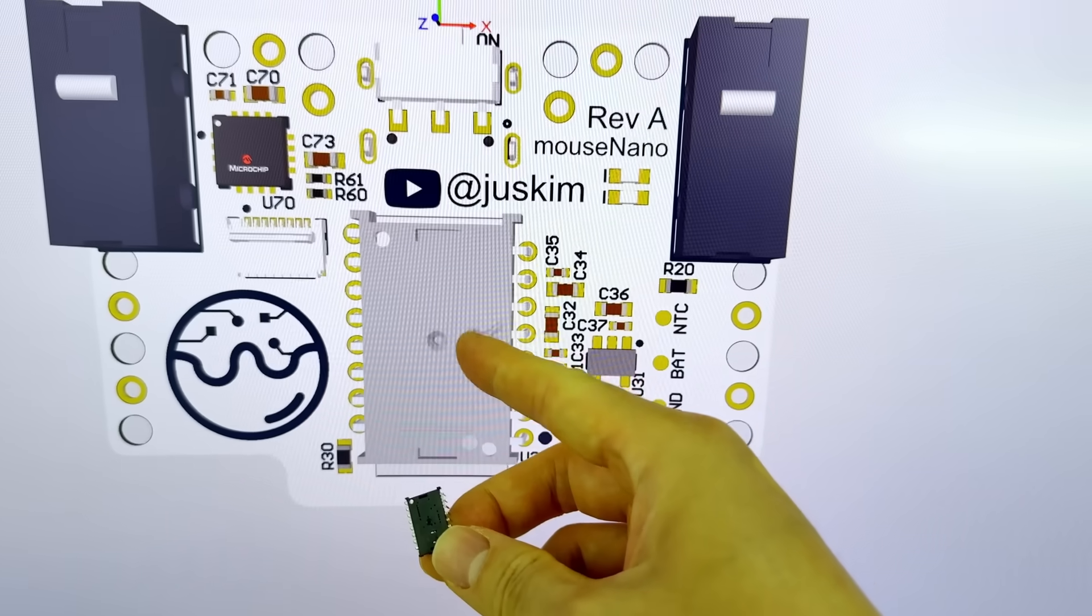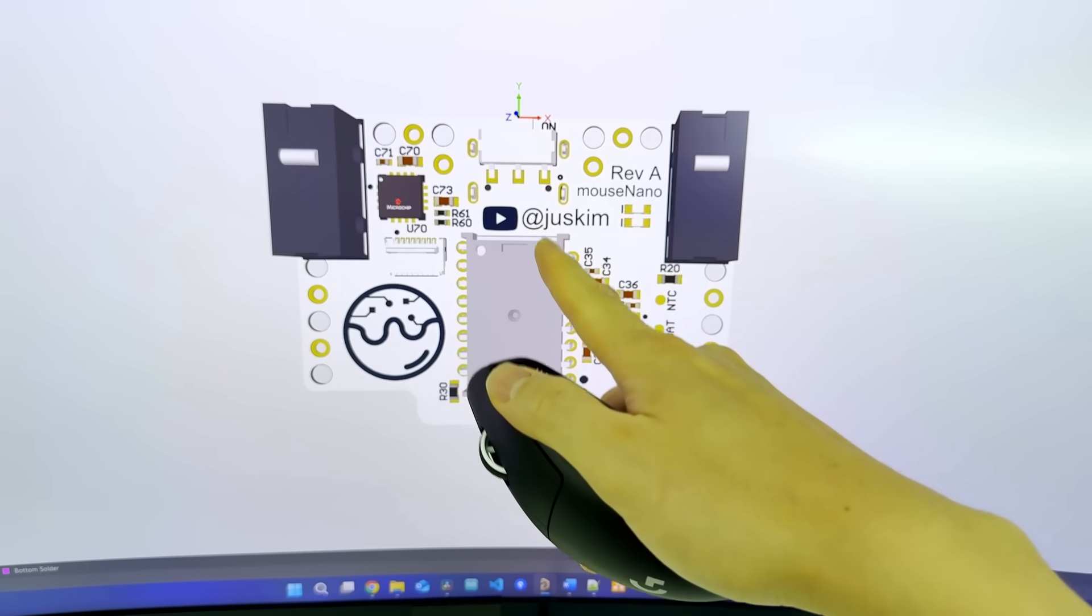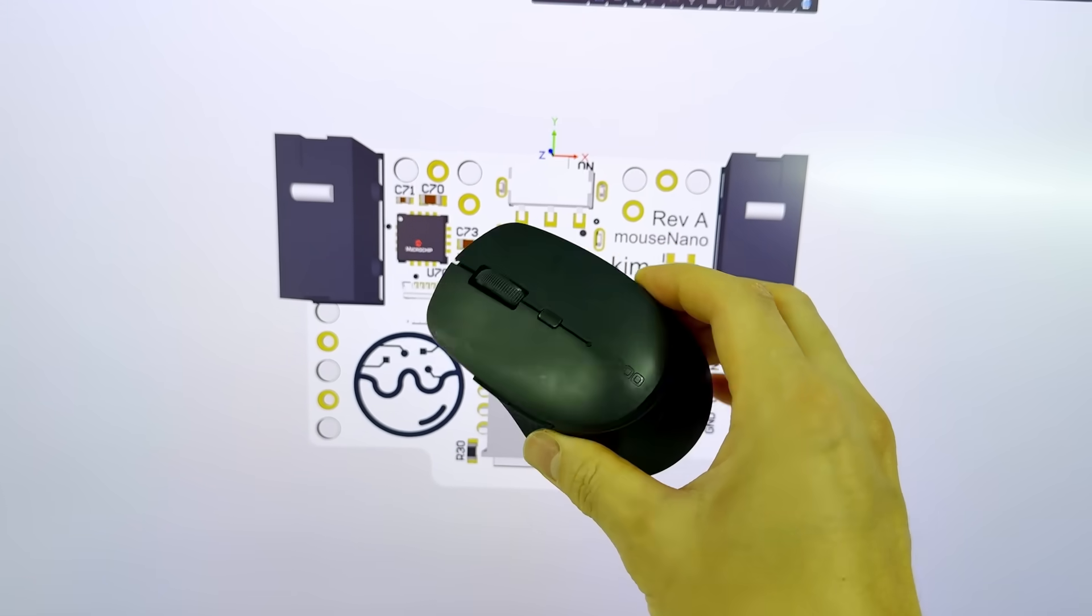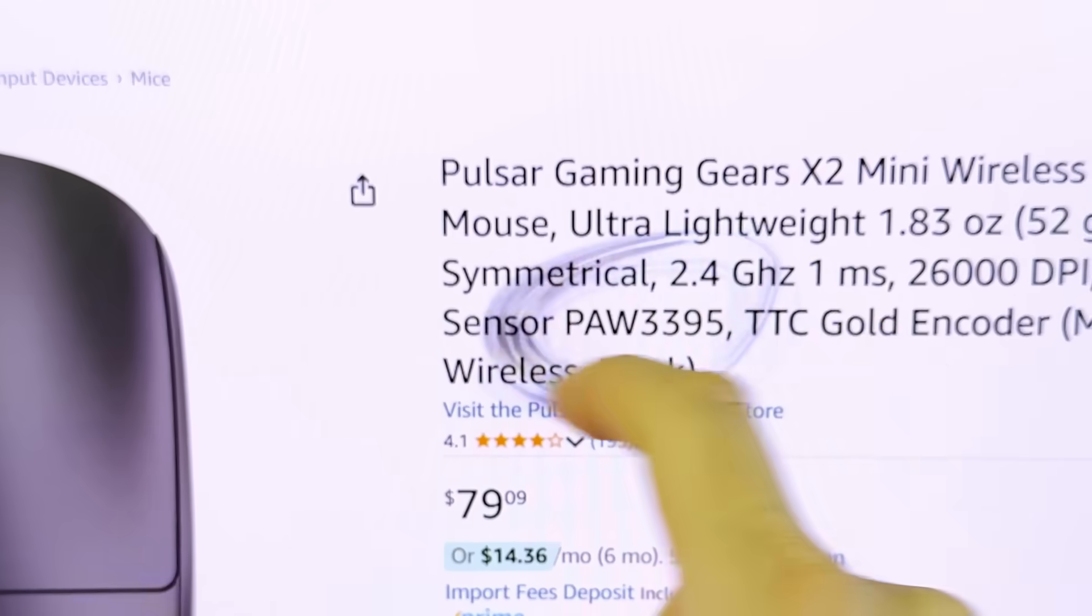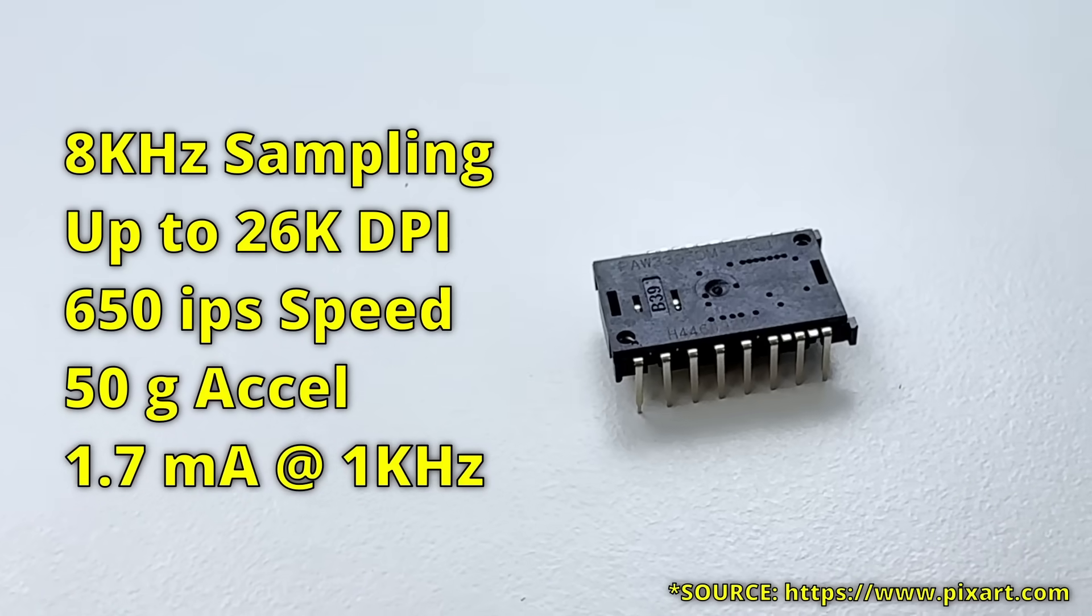And finally, we get to the most important part, the mouse sensor. The thing that makes this a gaming mouse and not some crusty $5 office junk. We have the Pod3395 mouse sensor found in many popular gaming mice. You can pause the screen if you want the spec numbers.